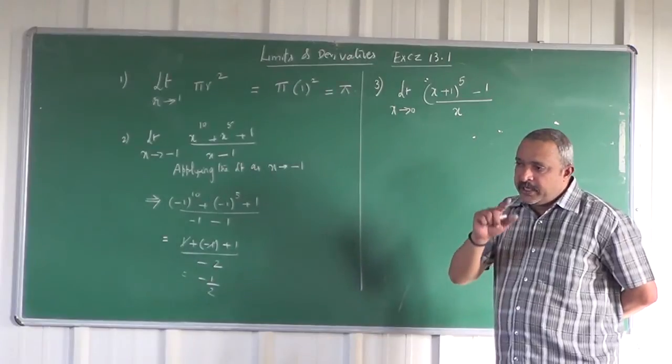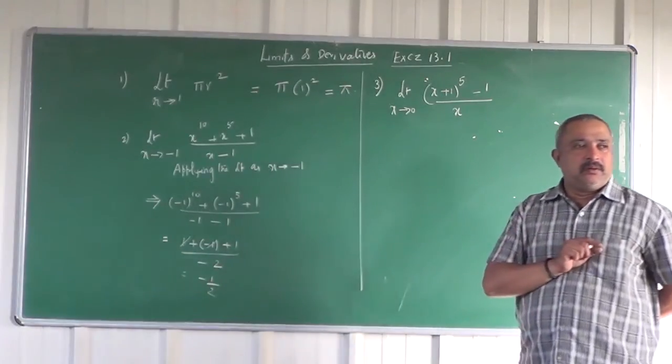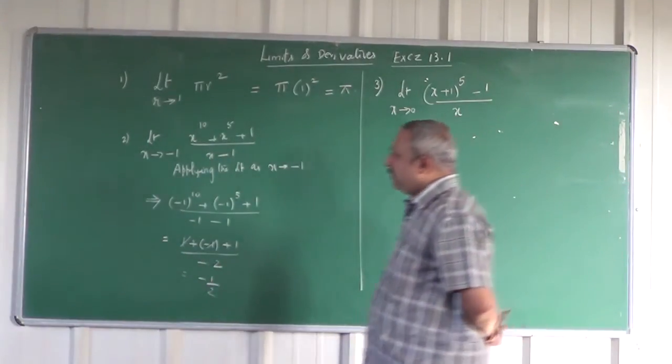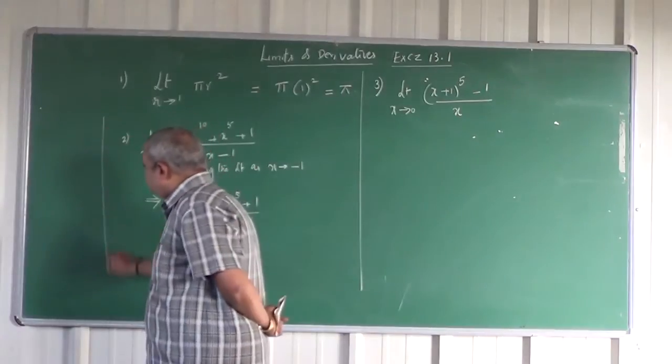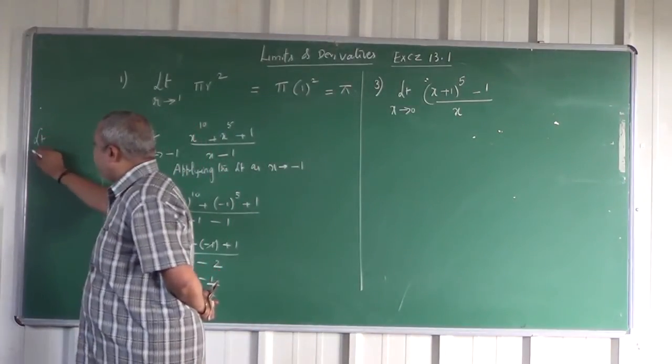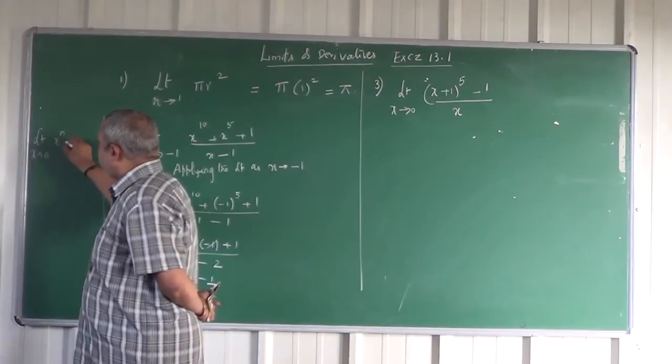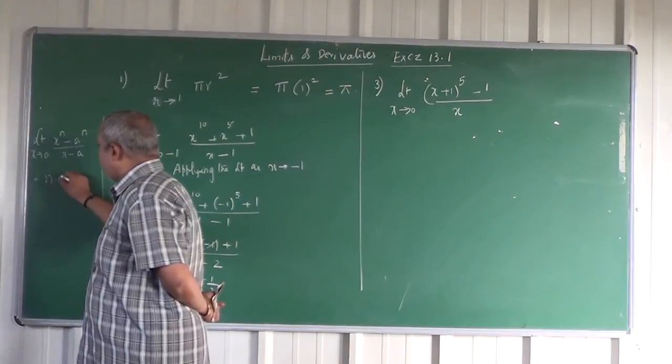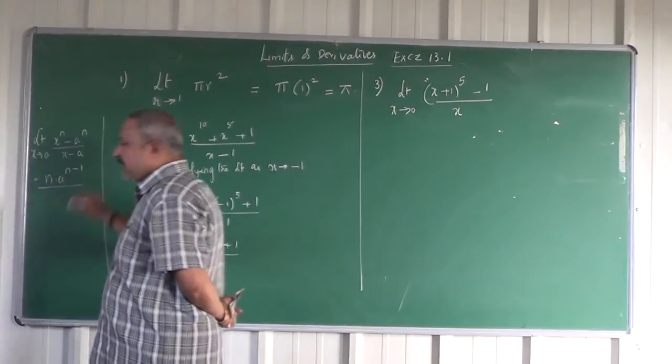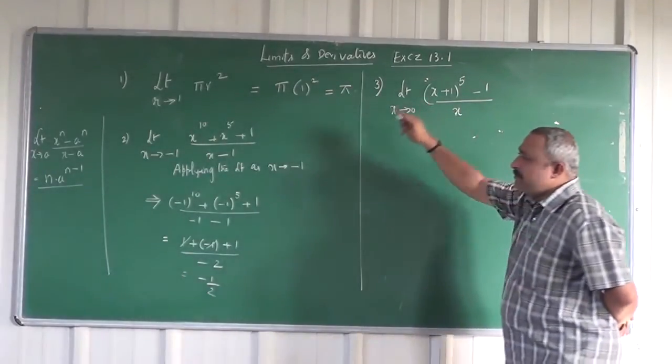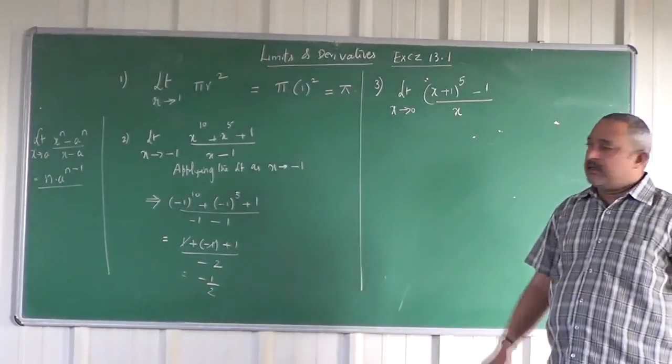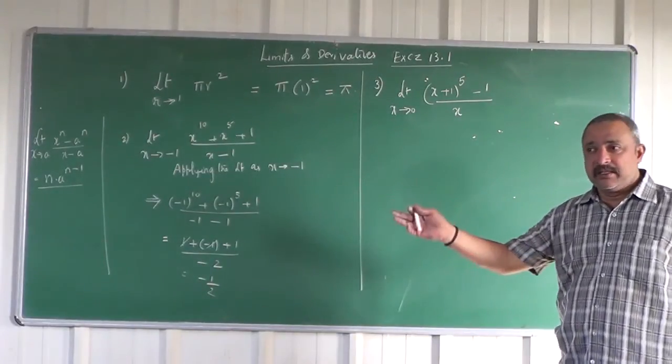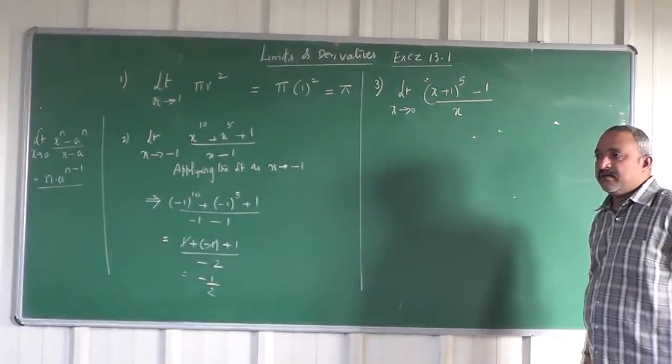Now you need to reduce it to a form that matches the formula. We know that limit x tending to a of (x^n - a^n)/(x - a) equals n·a^(n-1). Let's see if it's possible to convert this problem into that form or if there's another way to get the limit.